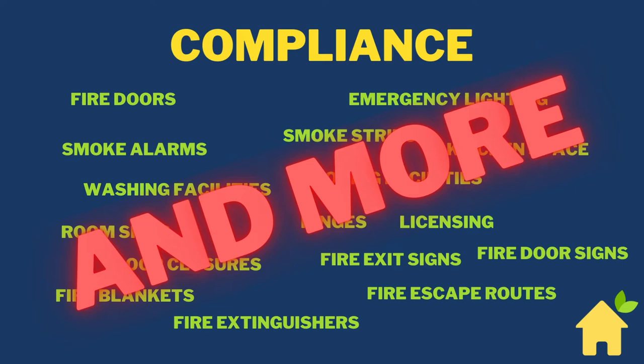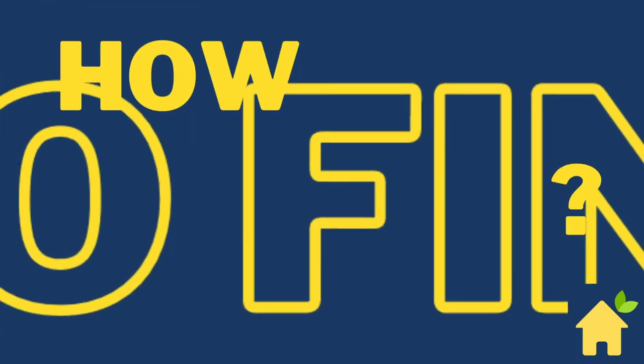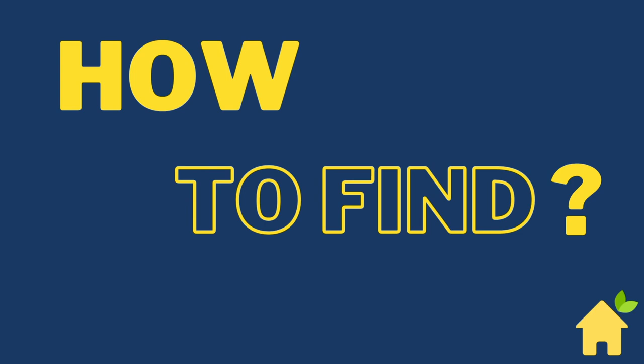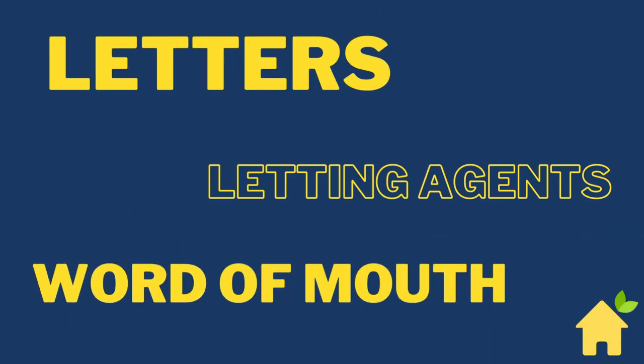So you're all going to be asking: how do you find these properties? These are the three most popular ways of finding a rent to rent HMO — letters, letting agents, or word of mouth. You might know someone who's got a HMO and they're struggling to fill the property or they've moved out of area. But for this instance we're going to focus on letters.